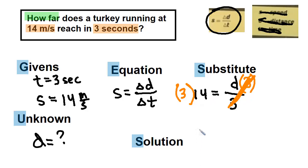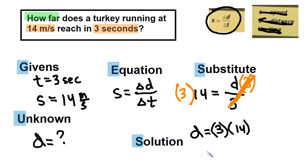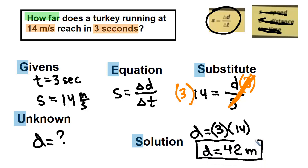Now d is all by itself: d = 3 × 14. Put that in the calculator and get 42. For units, distance is measured in meters — not time units — so the answer is d = 42 meters. The turkey travels 42 meters.